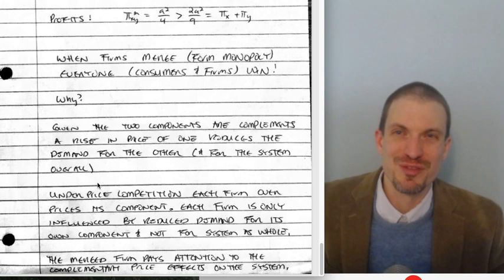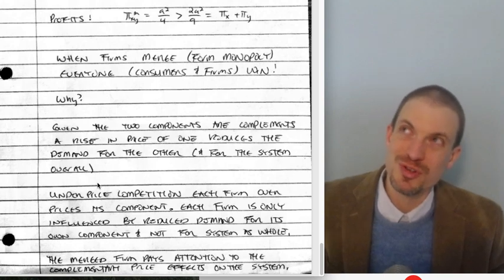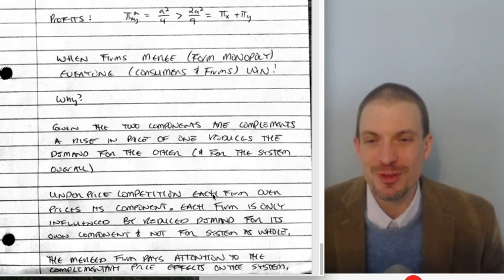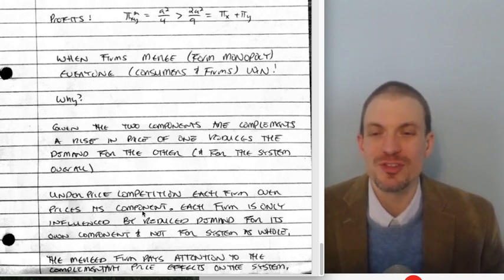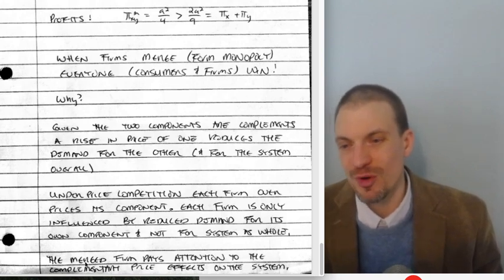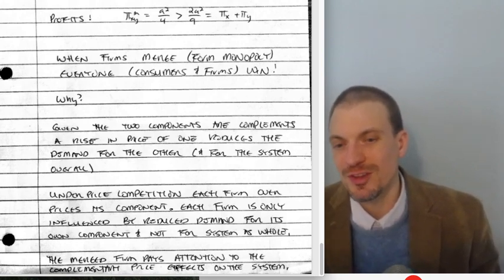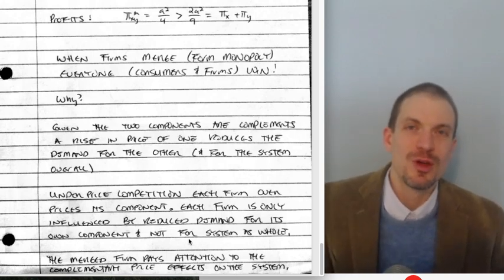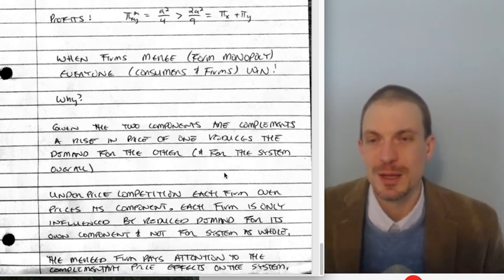Maybe you'd buy the more expensive smartphone if you have the more expensive plan because you get more use out of it. But let's put that aside for now. Under price competition, each firm overprices its component. Each firm is only influenced by the reduced demand for its own component, not for the system as a whole. For example, the merged firm pays attention to the complementary price effects on the system, whereas the individual firms do not. And so anyway,